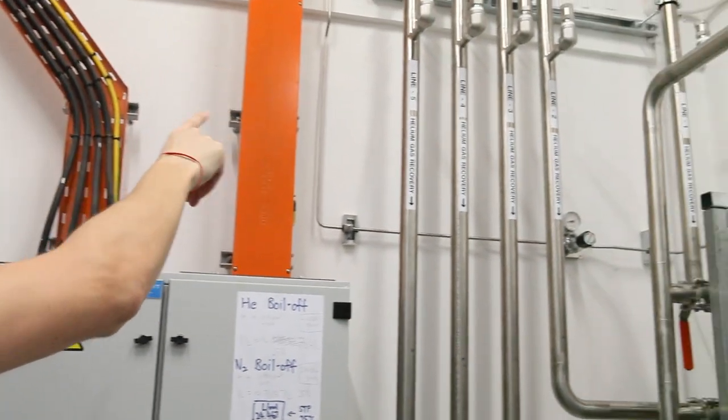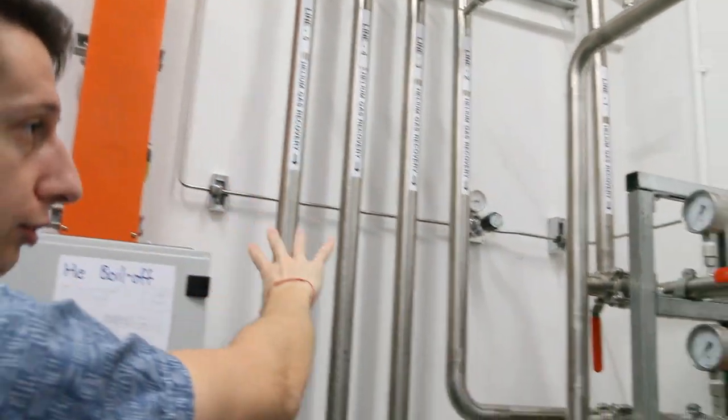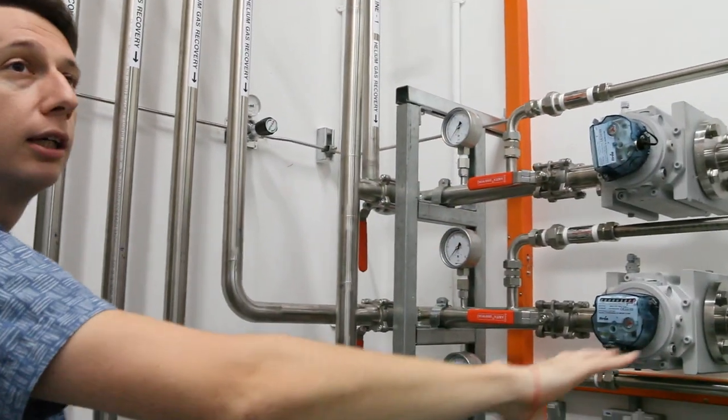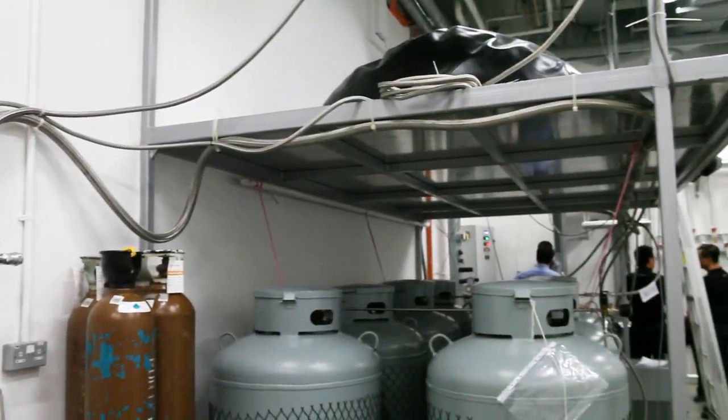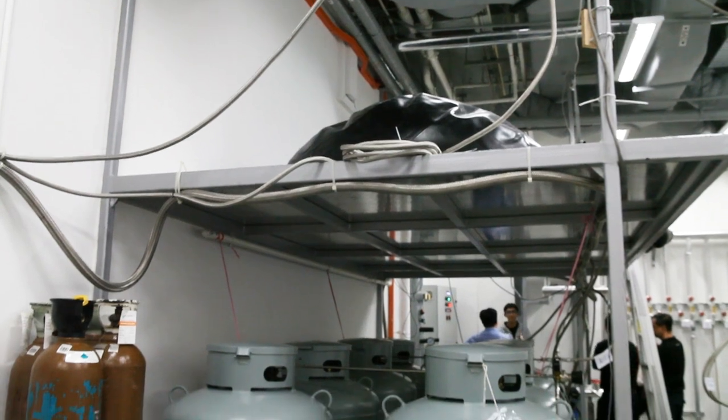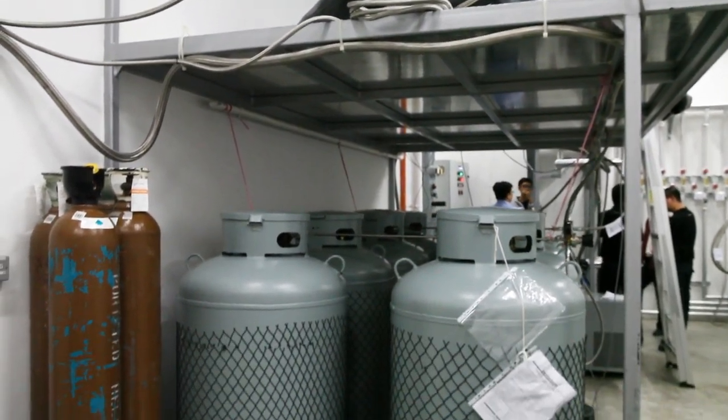Gas arrives through leak-tight stainless steel recovery pipelines from various labs all over the building. It is collected in a large rubber balloon, then compressed to 400 psi for ease of storage in metal cylinders.